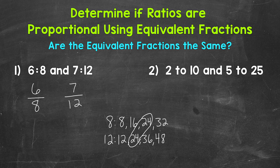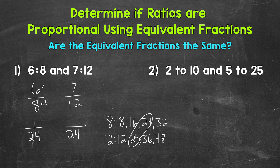Now that we have that least common multiple, we are going to rename our original ratios with 24 as the bottom term, the denominator. So we're going to rename our original ratios as equivalent ratios or equivalent fractions with 24 being the bottom number. Let's come back and rename. Starting with 6 to 8: how do we get 8 to equal 24? Well, 8 times 3 is 24. Whatever we do to the bottom, we must do to the top in order to keep this equivalent. So multiply 6 by 3 as well — 6 times 3 is 18. 18 to 24 is equivalent to 6 to 8, so we're not changing the value of that ratio at all.